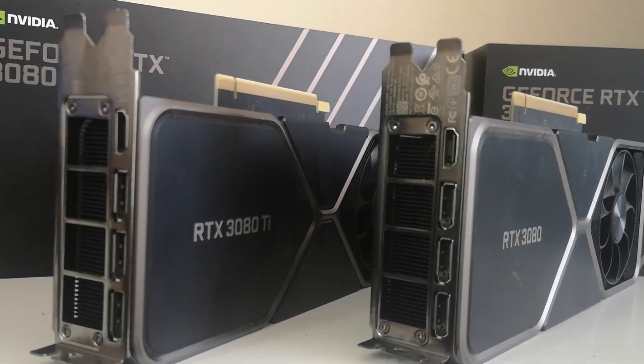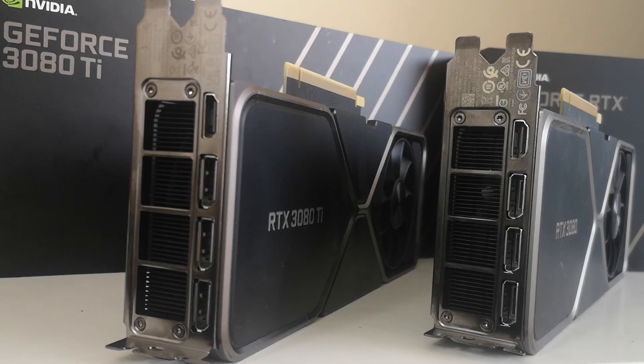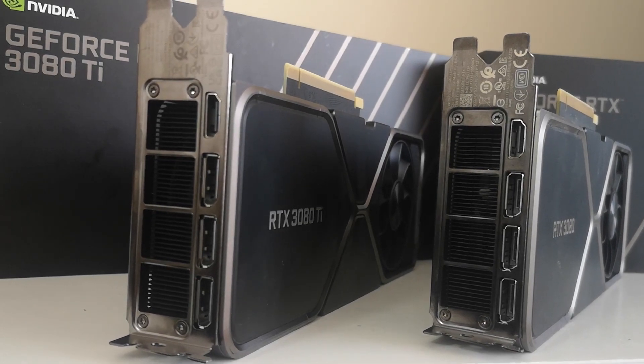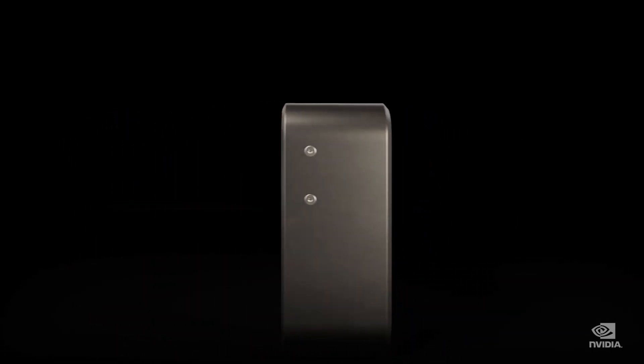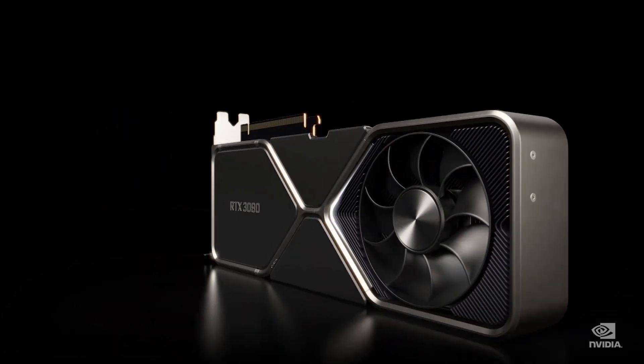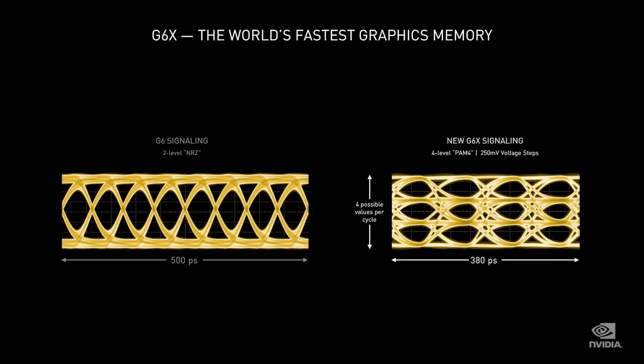Graphics memory such as GDDR6 and GDDR6X has higher latency compared to something like DDR4 memory, which you're probably running for a Zen 3-based processor. This is something GPUs have been dealing with for a long time. This higher latency can be offset via cache systems on the GPU itself and running tons of work concurrently.